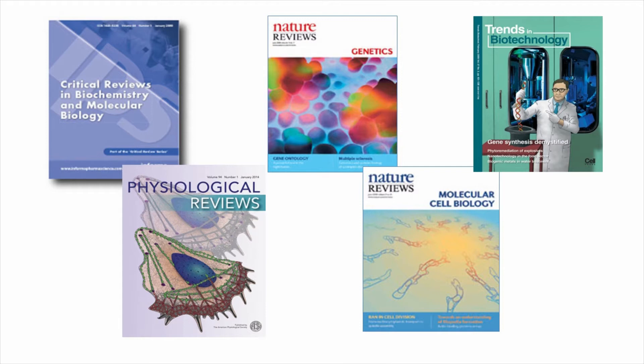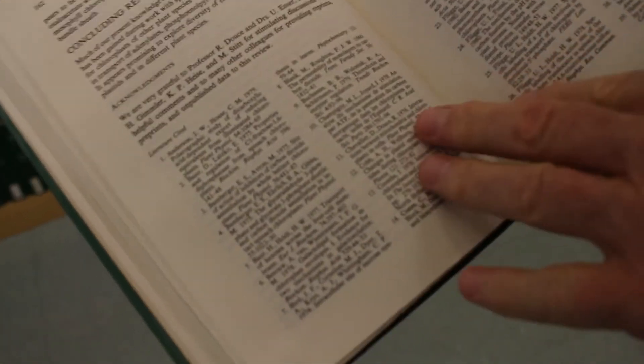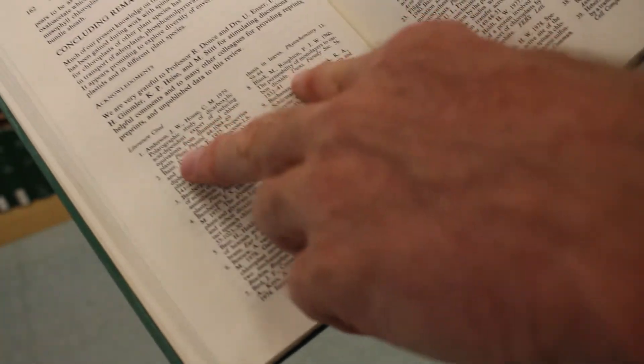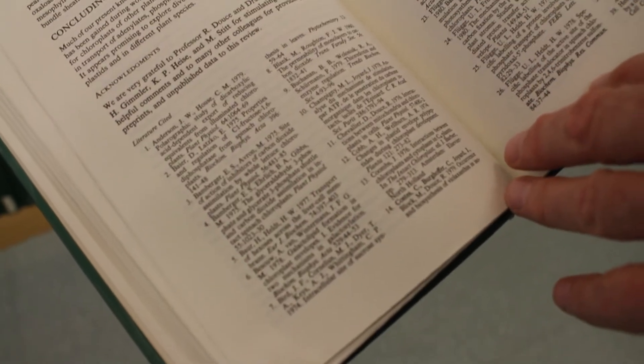A good review article will give up-to-date summaries of several studies and could be more useful to you than primary research articles. At the end of all scientific articles, you'll see a reference list that gives the necessary information for finding the original sources of background information discussed in the article. This allows you, the reader, to follow up on interesting topics for more details. Citations are keywords embedded in papers that tell the reader which references are applicable to a specific part of the paper. The use of citations acknowledges and gives credit to the originators of an idea, and it's a critical element in scientific writing. Large review articles or graduate theses can have hundreds of references.